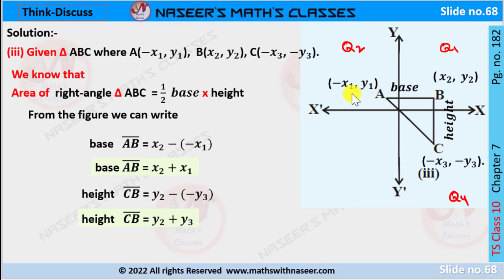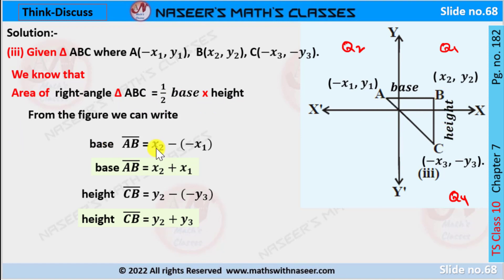Think and Discuss, third problem. In the figure, triangle ABC is given where A is in the second quadrant with coordinates (−x1, y1), B is in the first quadrant with coordinates (x2, y2), and C is in the fourth quadrant with coordinates (−x3, −y3). It is a right angle triangle. The base AB equals the difference between x2 and (−x1), which gives x2 plus x1.